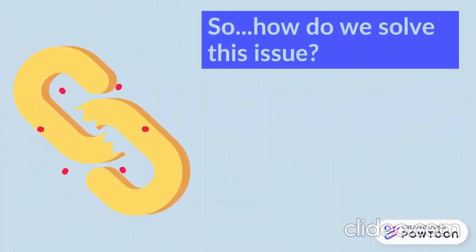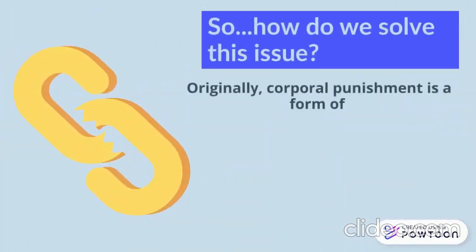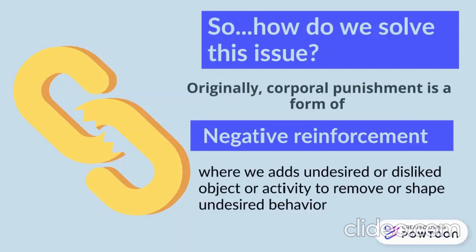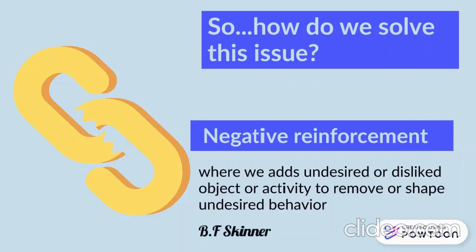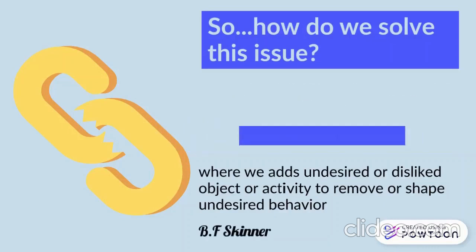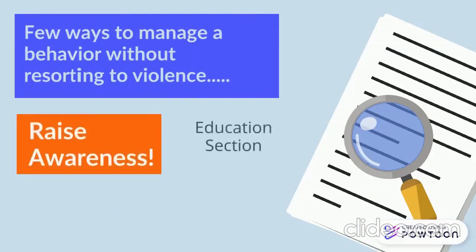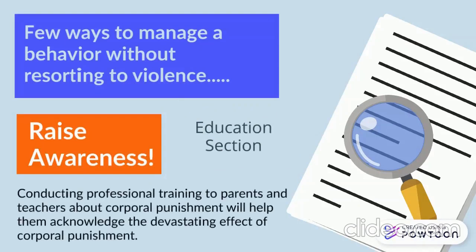So how do we solve this issue? Originally, corporal punishment is a form of negative reinforcement — adding an undesired or disliked object or activity to remove or shape undesired behaviour — based on BF Skinner's operant conditioning theory. There are a few ways to manage behaviour without resorting to violence. For example, raising awareness, especially in the education sector, and conducting professional training for parents and teachers about corporal punishment, to help them acknowledge its adverse effects.